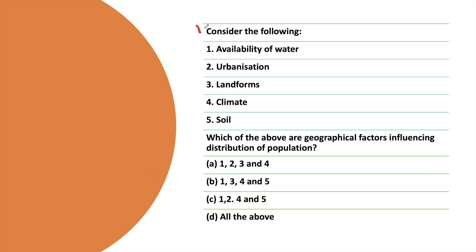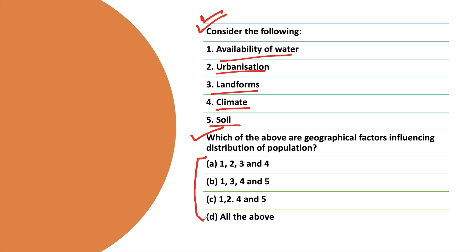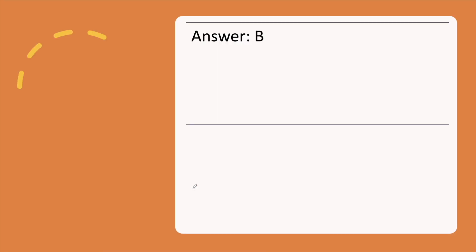The next question: Consider the following — availability of water, urbanization, landforms, climate, soil. Which of the above are geographical factors influencing distribution of population? The correct answer is option B.